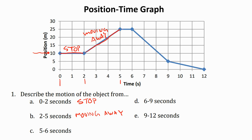Up here we have another flat line again between five and six seconds. Anytime you have a flat line on a position-time graph, you're not moving — you're essentially in the same place during that segment of time. Between five and six seconds, my position did not change; it stays at 25. So what am I doing there? I'm stopped again. My position has not changed over that amount of time.